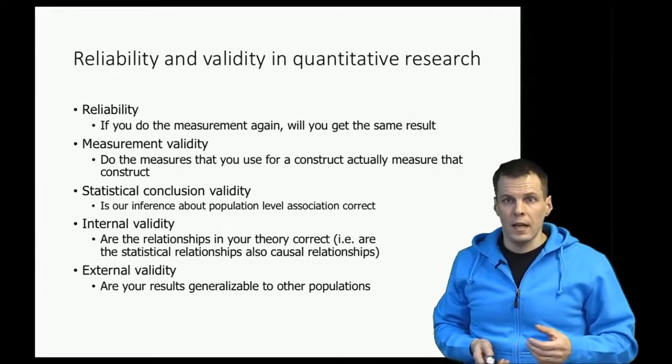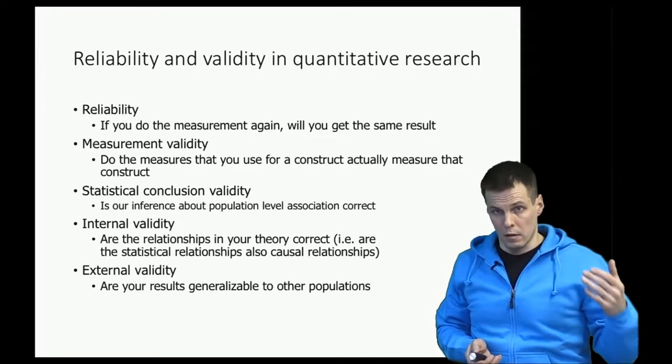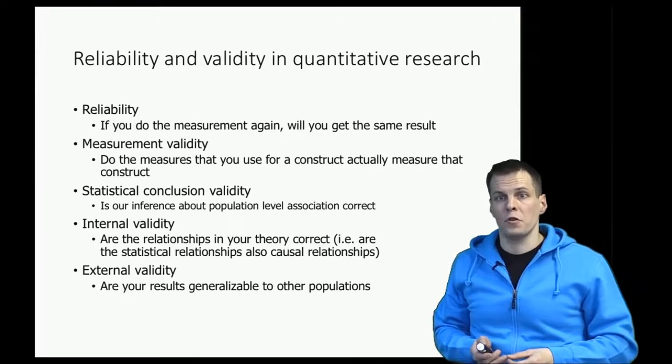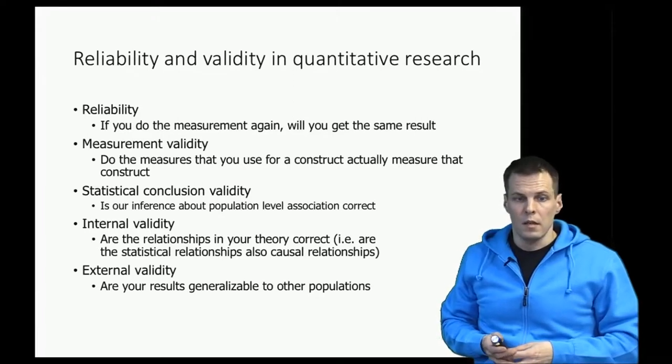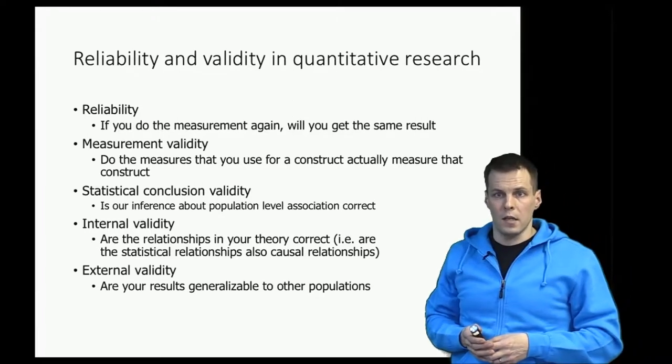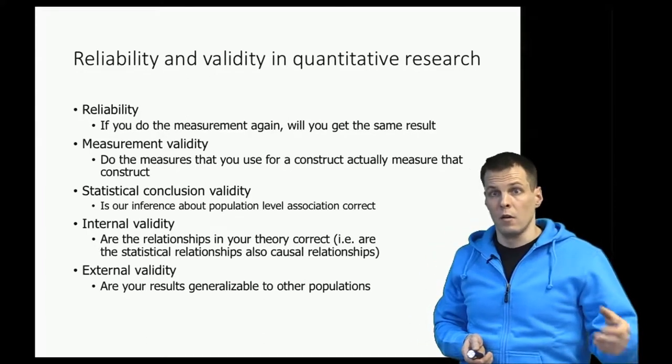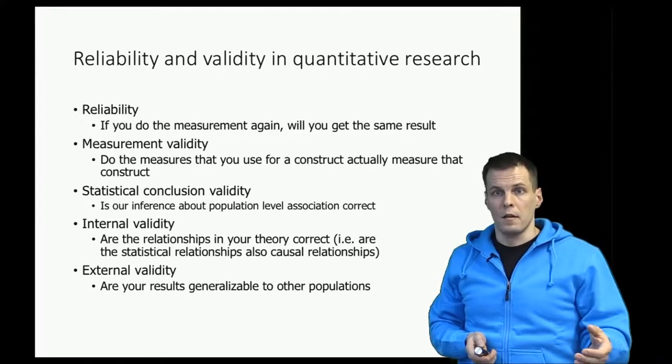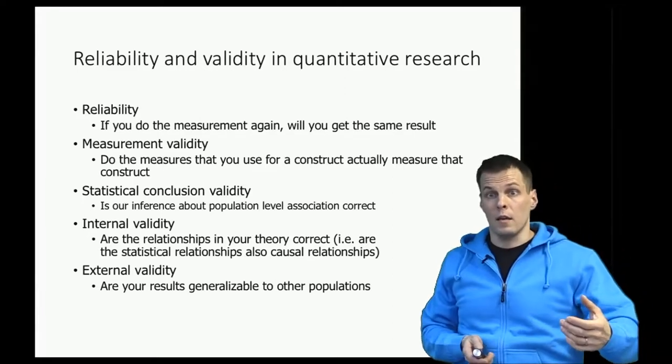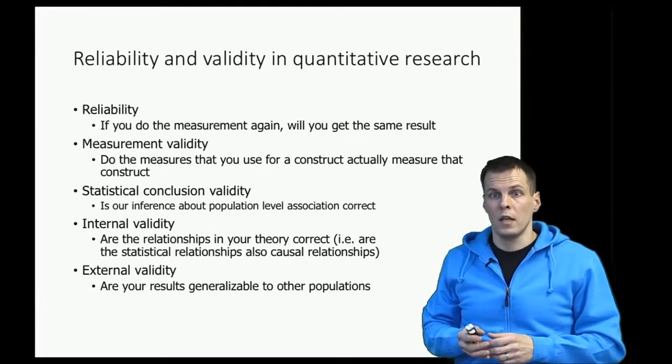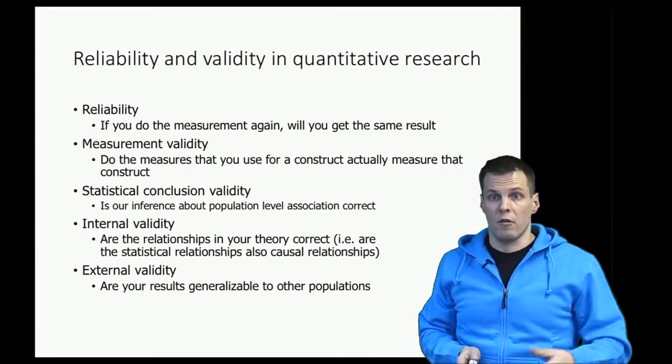Then validity can be broken down into four different categories. Measurement validity refers to whether the variables in our data measure the concepts that we claim they measure. Statistical conclusion validity refers to whether our statistical results are correct. So if you have identified a trend in the sample, have we identified that correctly? Is there really a difference or a trend in the population? So it relates to whether our statistical associations measured from sample generalize to the population.